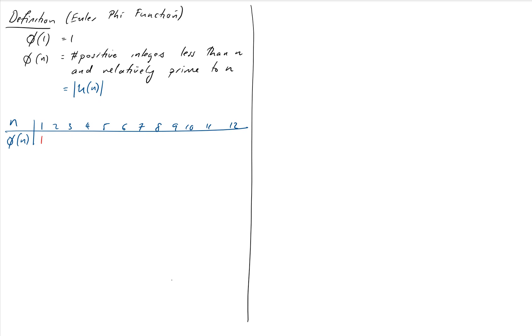So phi of 1 is by definition 1. Phi of 2 is also 1. There's only one number less than 2 that's relatively prime to it, which is 1. 3 has both 1 and 2. 4, well, that has 1 and 3, so there are 2 of those. 5 has 1, 2, 3 and 4, so there are 4 of these ones. 6 has 1 and 5. There are 2 there.